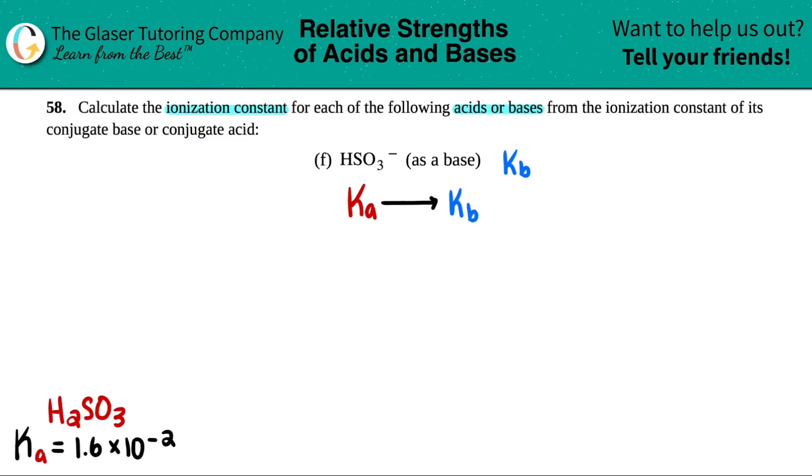But how do we do that? Well, there's a formula. That formula is this one right here. KW equals Ka times KB. Now, if we want to find KB, we want to get that alone.